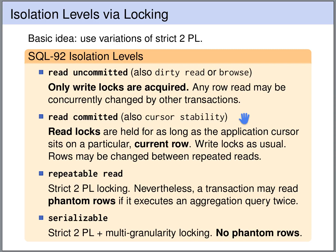Since we immediately release the read locks, we don't adhere to the strict two-phase locking protocol for reads, so rows may be changed during repeated reads. The isolation level repeatable read can be achieved by following the strict two-phase locking protocol. But even then, we can still have phantom rows — if we execute an aggregation query on the same table twice, we may suddenly see new rows the second time. Finally, the isolation level serializable can be achieved by combining strict two-phase locking with multi-granularity locking, which eliminates phantom rows.